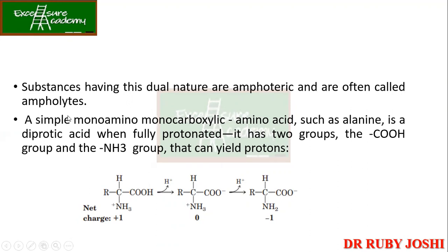Substances having this dual nature are amphoteric and are often called ampholytes. Ampholytes are an important topic we'll study in detail in upcoming lectures, including how they work in SDS-PAGE and 2D gel electrophoresis. A simple mono-amine mono-carboxy amino acid such as alanine has one amino group and one carboxyl group, but not all amino acids are mono-amine mono-carboxy — for example glutamate is not.